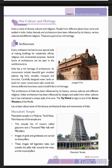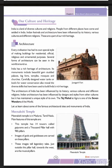First is the Meenakshi Temple in Madurai, Tamil Nadu. This temple has 14 towers called Gopurams and a hall of 985 pillars. Look at the diagram — you can see the 14 towers and the pillar hall. The images of gods and goddesses were carved from these pillars. These images tell legendary tales. Just outside the pillar hall towards the west are the musical pillars.